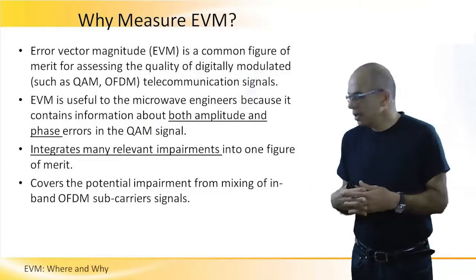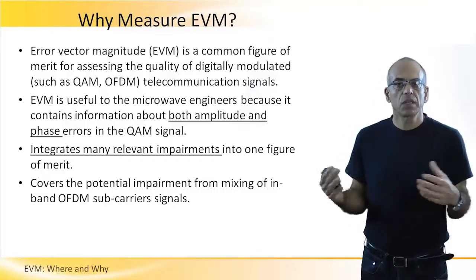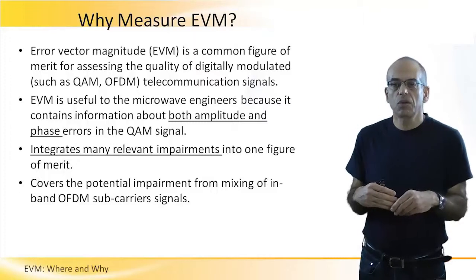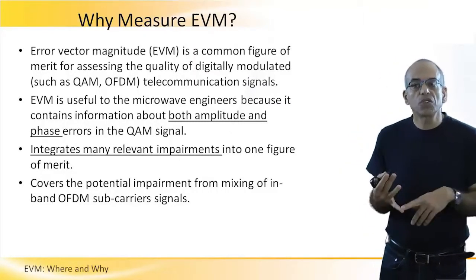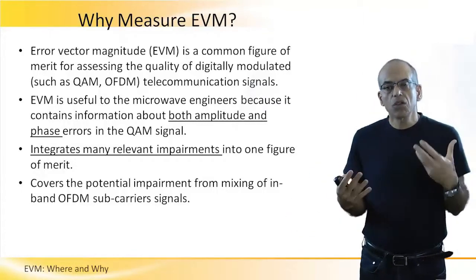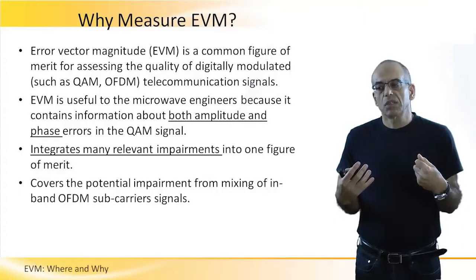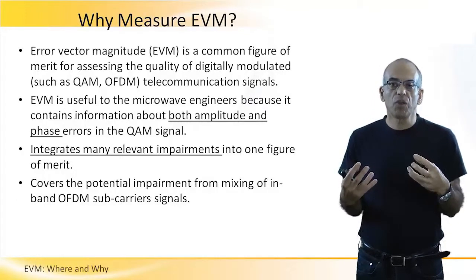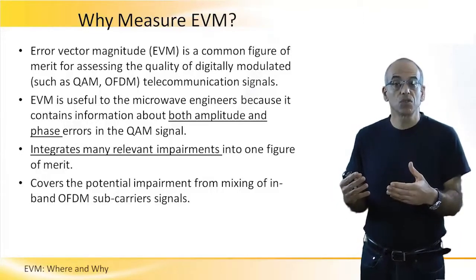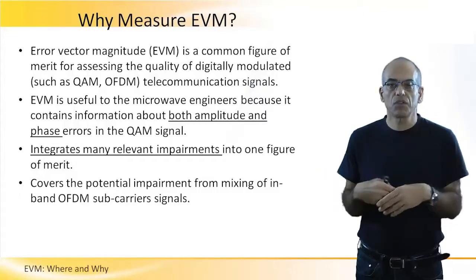Why do we measure EVM? EVM is quite a modern way of measuring impairments in transmitters and receivers. In the past, people were more focused on noise figure, phase noise, and linearity measures like 1dB compression and IP3. These parameters are still important today, but the nice thing about EVM is that it is a very compact and inclusive way of measuring all the impairments on the constellation map, which is more relevant to the newer modulation schemes that emerged in the last 15-20 years.